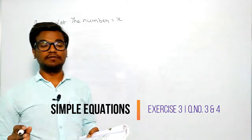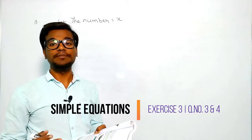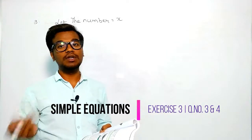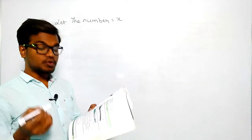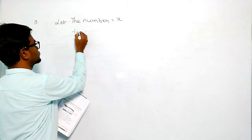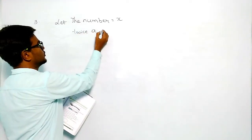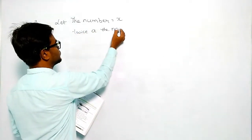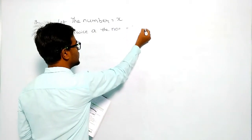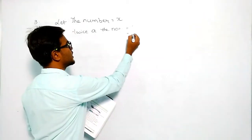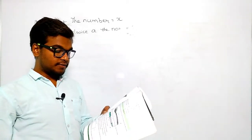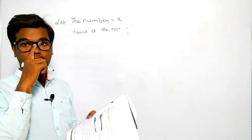From the question we need to work step by step to solve easily. Twice a number — twice means two times — so twice the number is two times x, that is 2x. Then, if we add seven to it, we get 7 plus 2x.